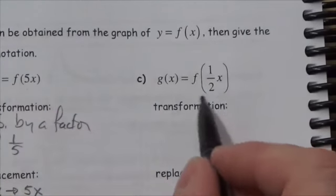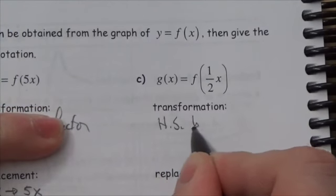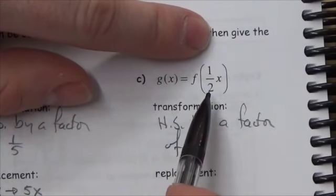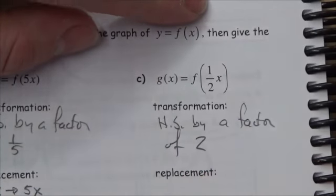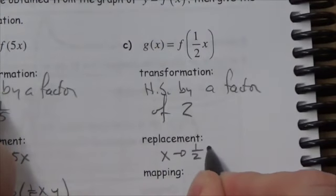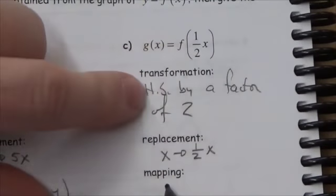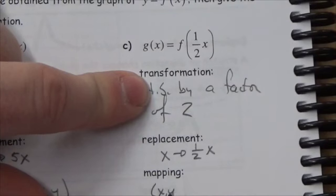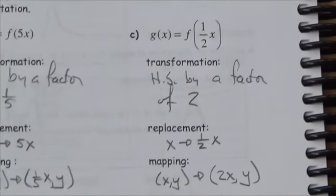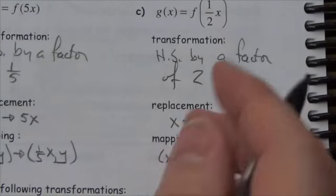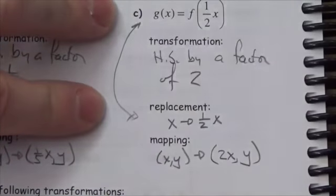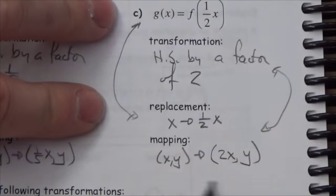For g(x) = f((1/2)x): it's inside the function, so horizontal. To isolate x I multiply by 2 — horizontal stretch by a factor of 2. The replacement is x → (1/2)x, and the mapping is (x, y) → (2x, y). The replacement identifies what happened in the function, while the mapping tells you what's actually happening on the graph — they describe the same transformation from different perspectives.